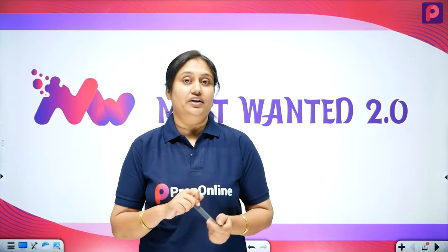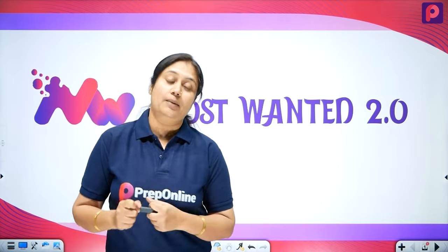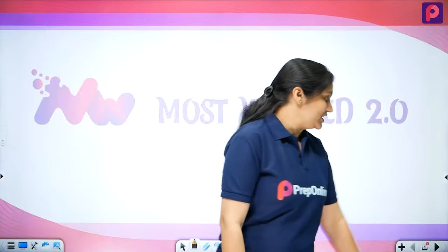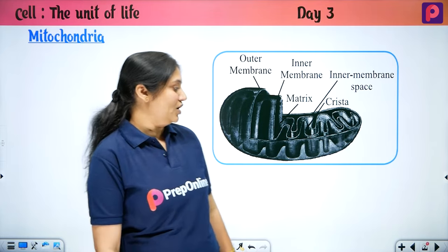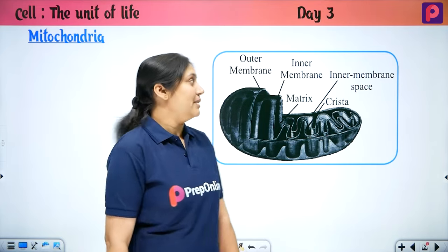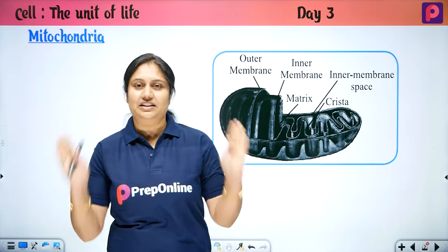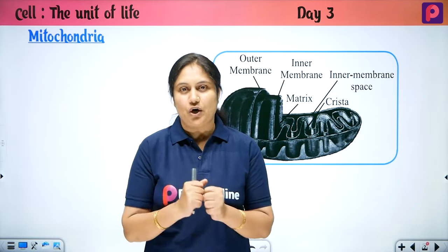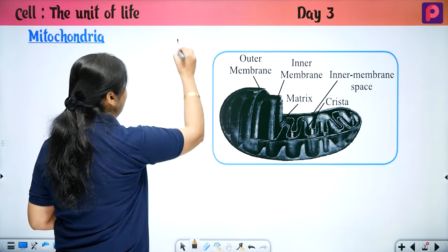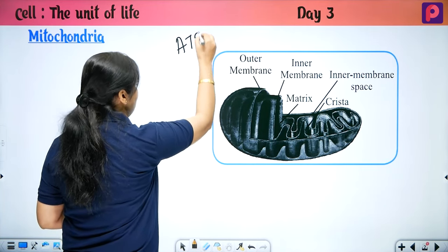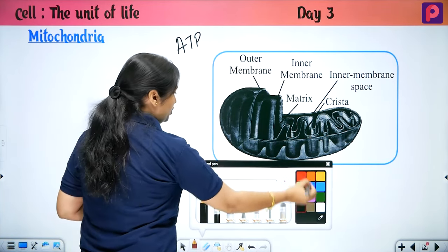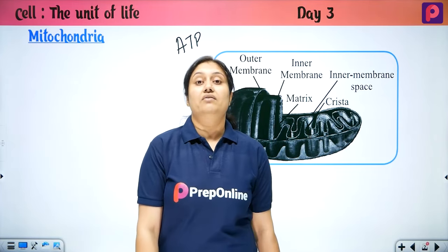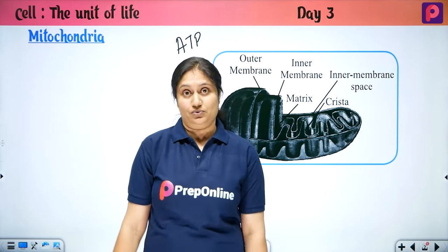Let's start another organelle — mitochondria. Look at mitochondria. What does it look like? This is the powerhouse. Why? Because ATP is stored here, so we call it the powerhouse.